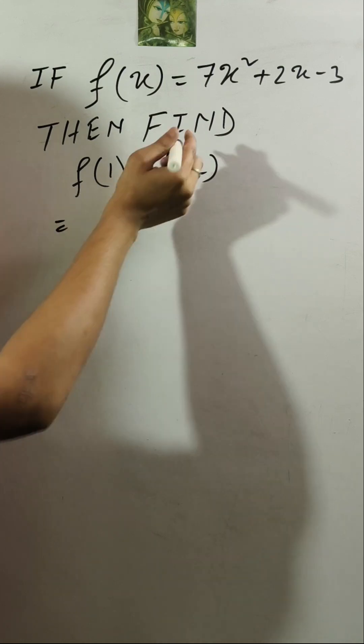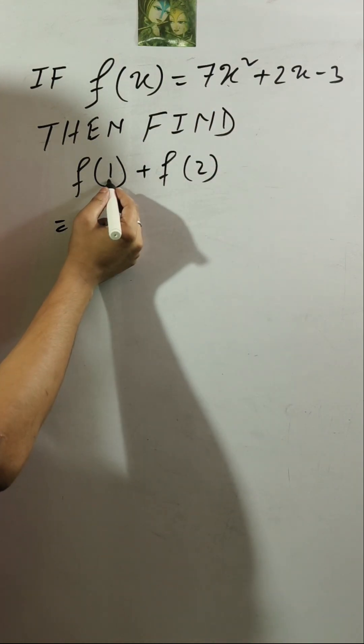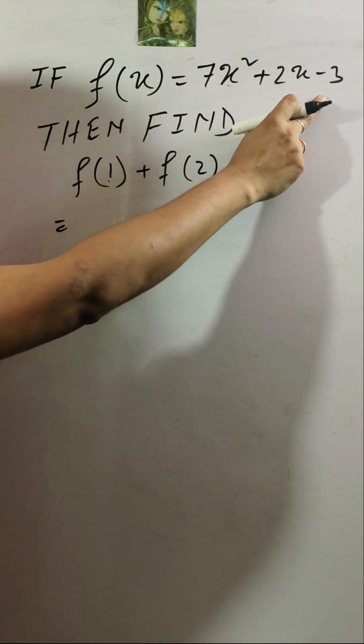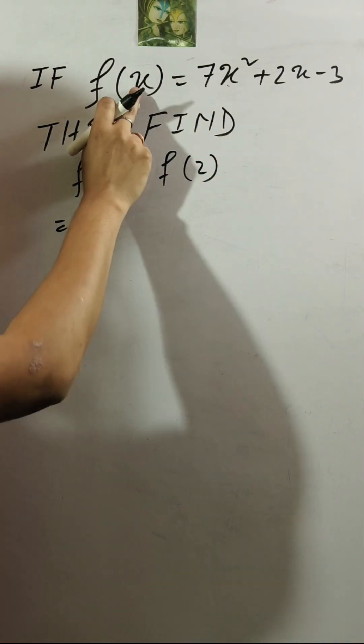Here F of 1 means in place of X we need to put 1. F of X is 7X squared plus 2X minus 3, so putting in place of X, 1...